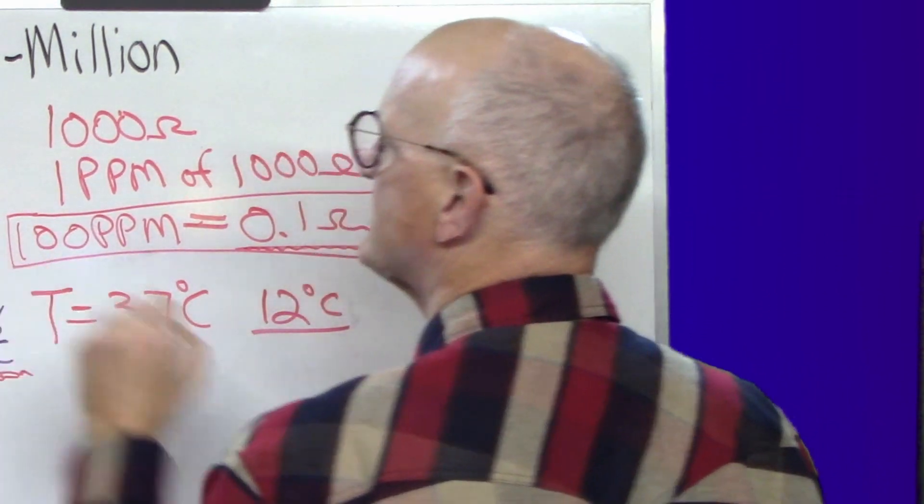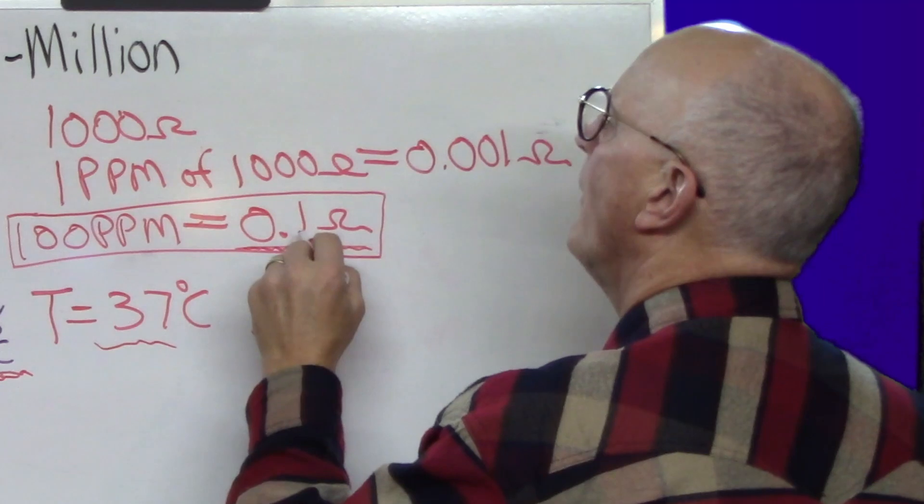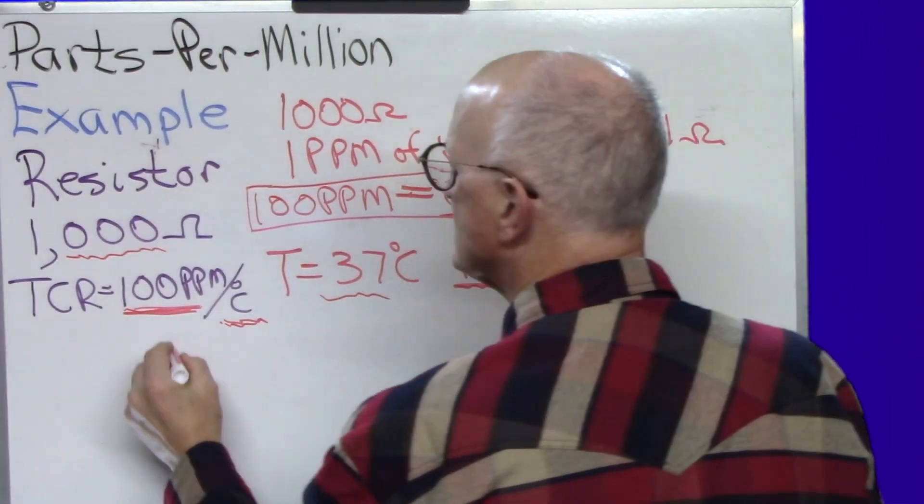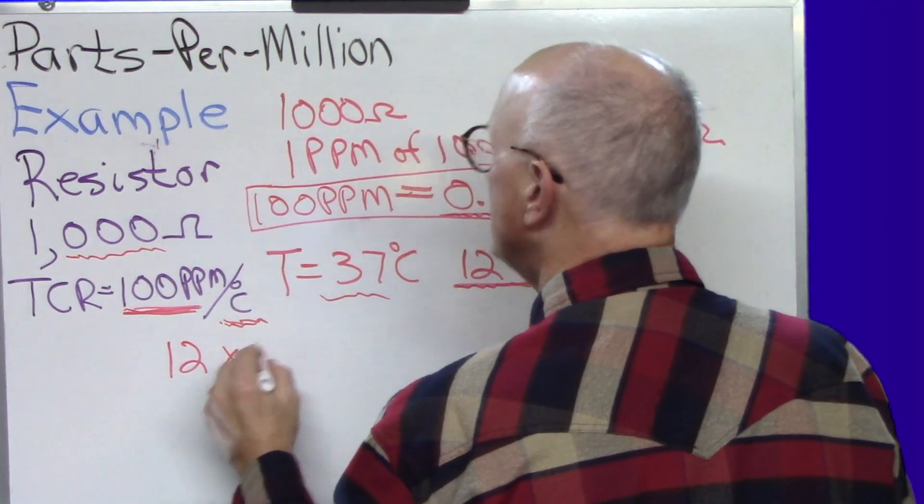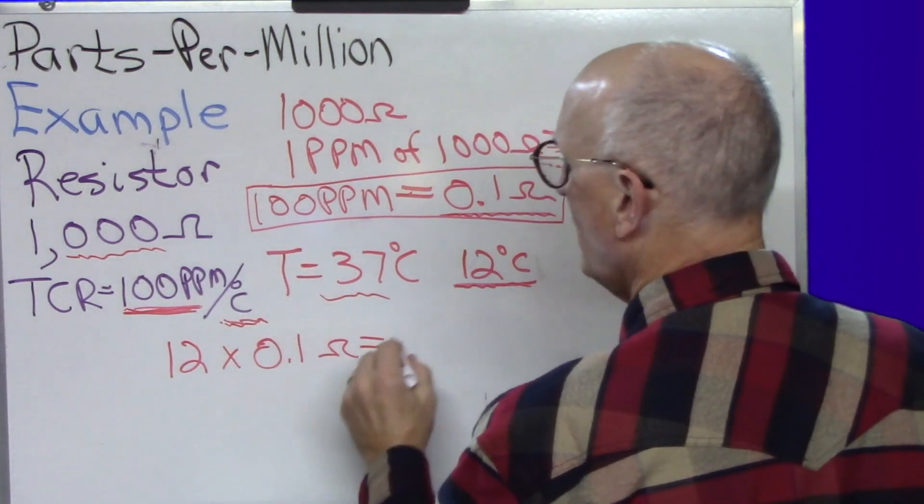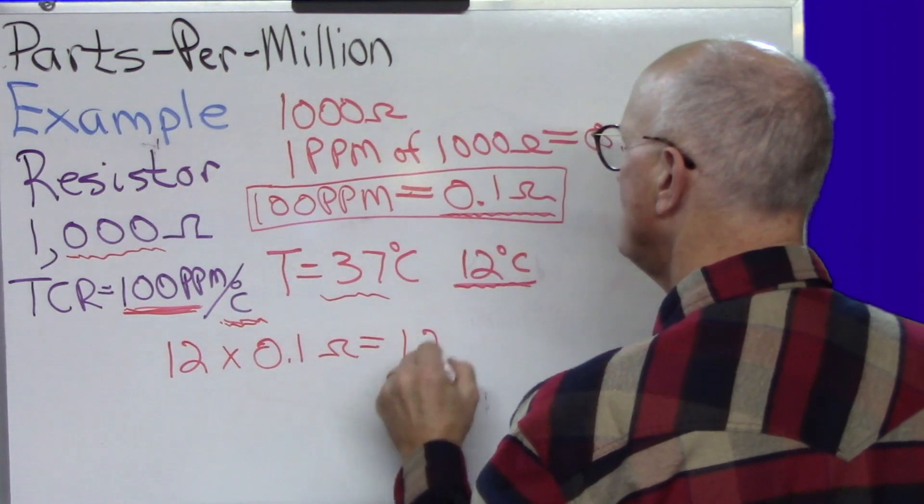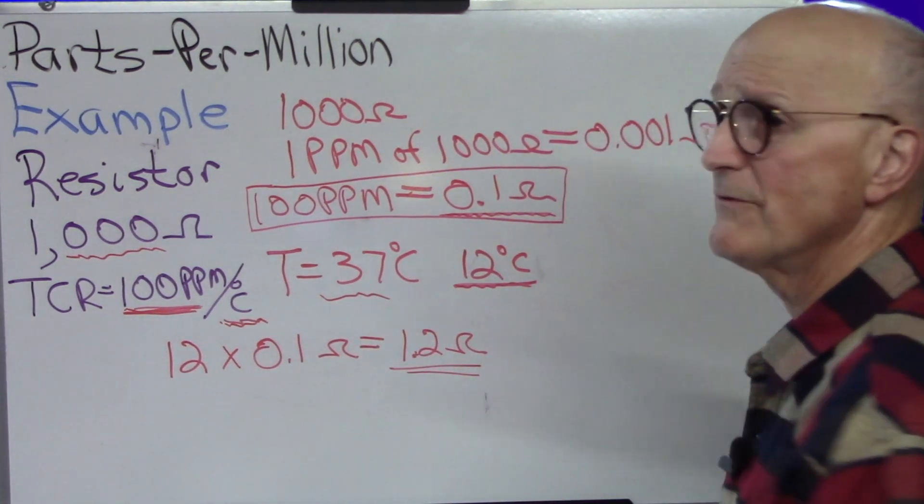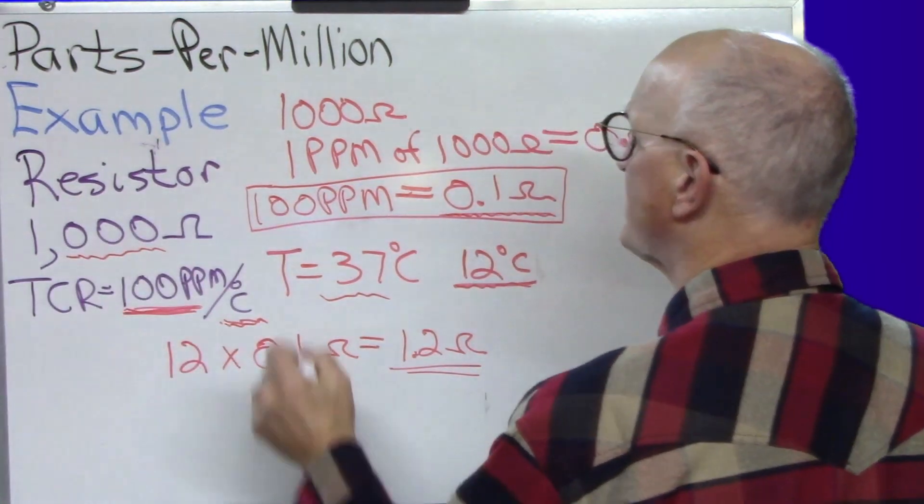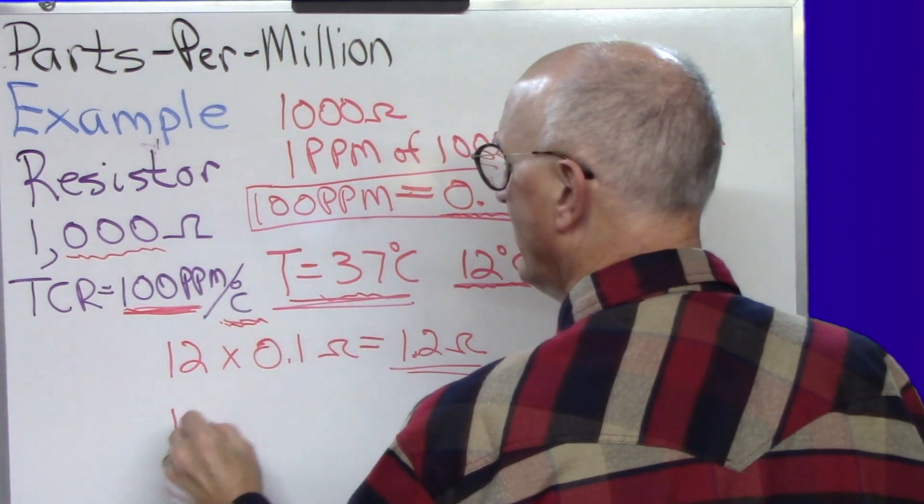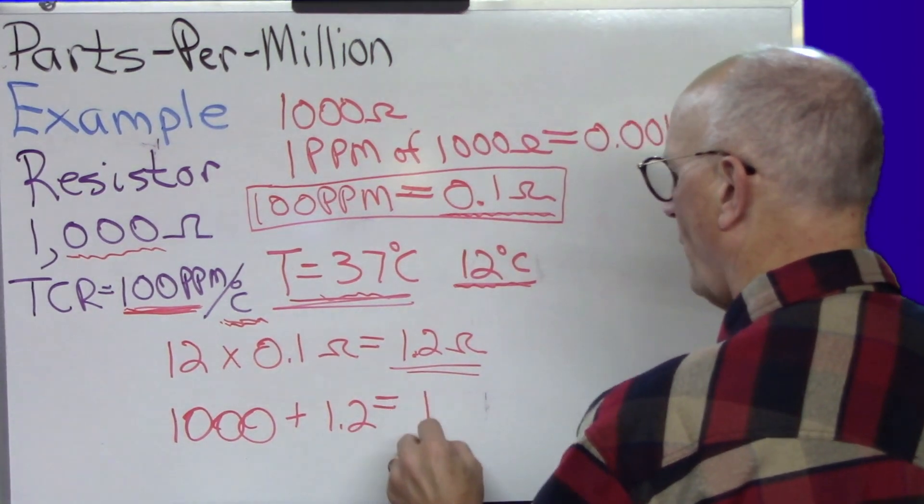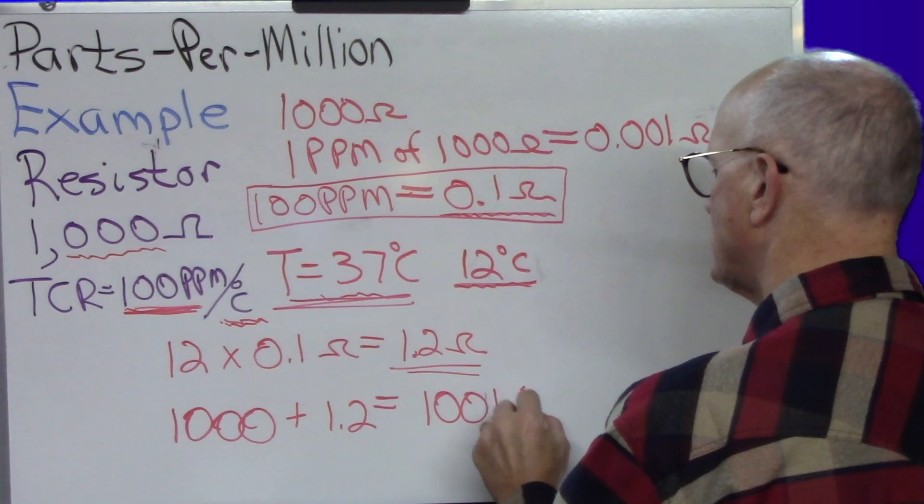So for every degree Celsius that we are above 25 degrees Celsius, this 1,000 ohm resistor will be 0.1 ohms bigger or larger in its value. And we're 12 degrees Celsius. So 12 times 0.1 ohms means that our 1,000 ohm resistor will be 1.2 ohms higher than its nominal value at 25 degrees. So our resistor, our 1,000 ohm resistor at 37 degrees Celsius is going to have the actual value of 1,000 plus 1.2 or 1001.2 ohms.